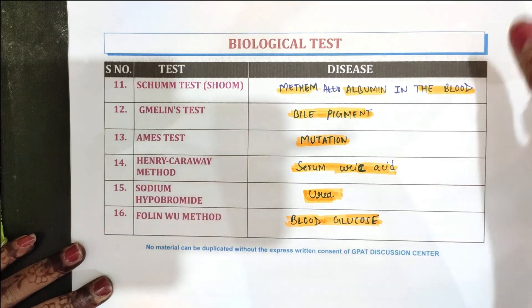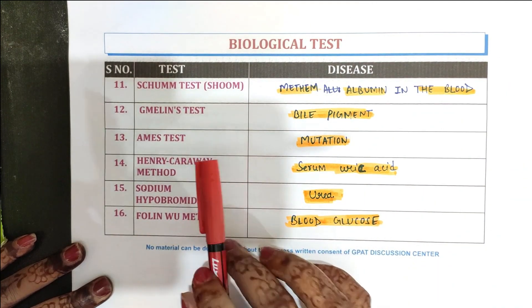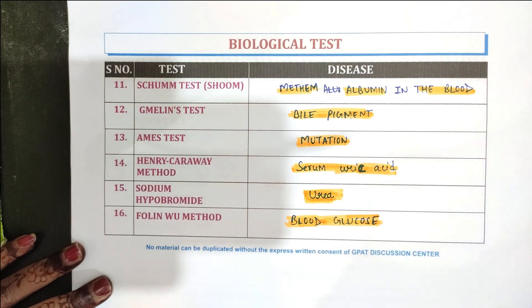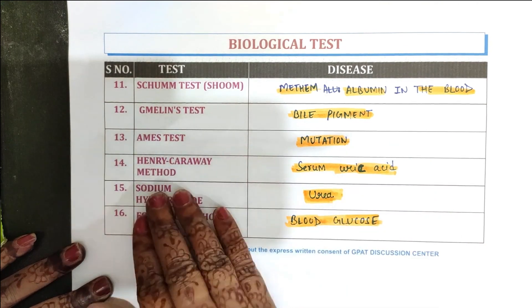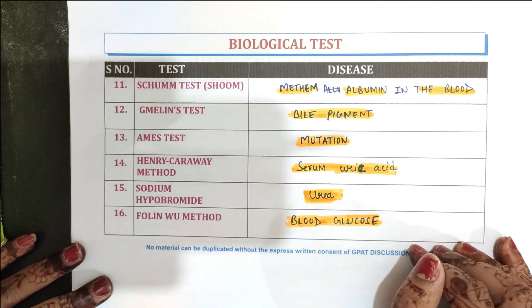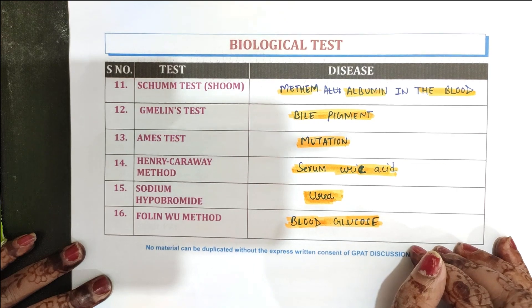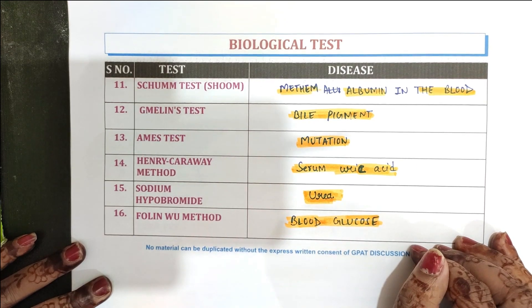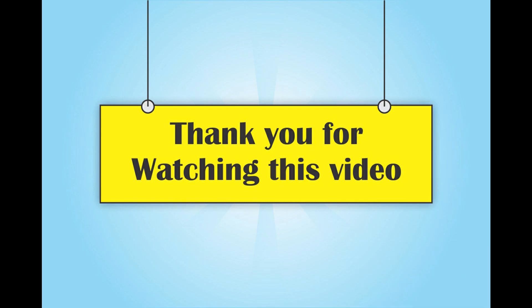So it is all about the different types of biological tests and with the help of these tests, what kind of substance can be determined and estimated. Thank you for watching this video.